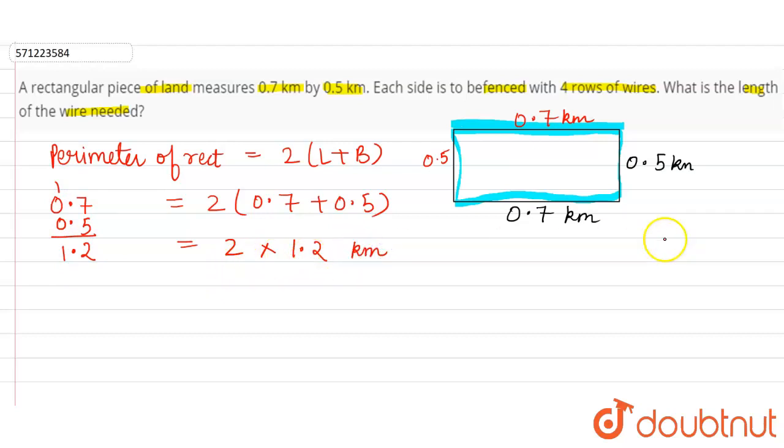Now we have to multiply 1.2 with 2. So 1.2 multiply with 2: 2 into 2 is 4, 2 into 1 is 2, and the decimal will come before 4 because there is only one decimal place. So 2 into 1.2 is 2.4 kilometers, which is the perimeter of this rectangle.